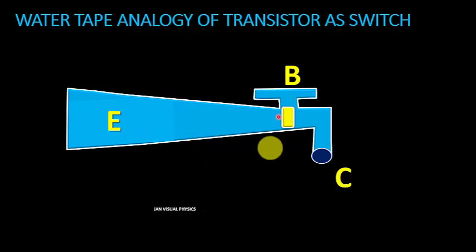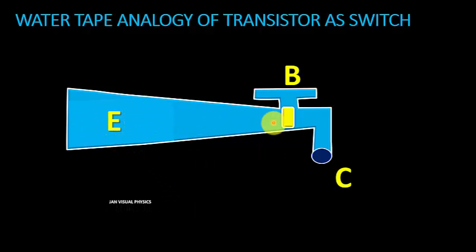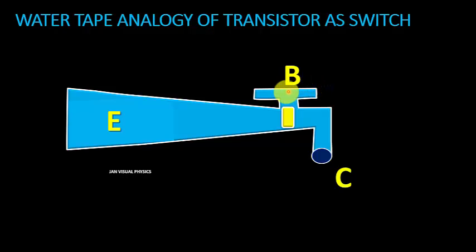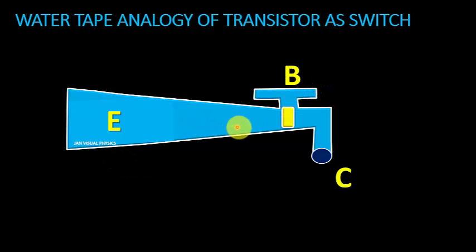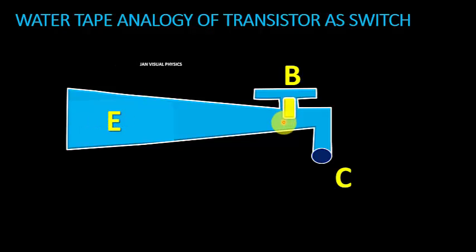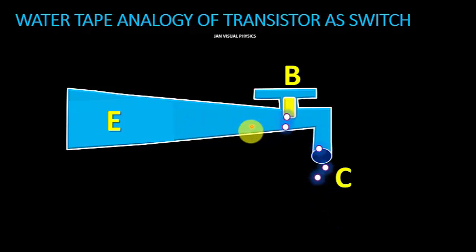This is a water tap. Water enters at this end and leaves at this end. This is the handle which controls the flow through the tap. If we slightly open the valve of the tap, we will see water will start to flow.